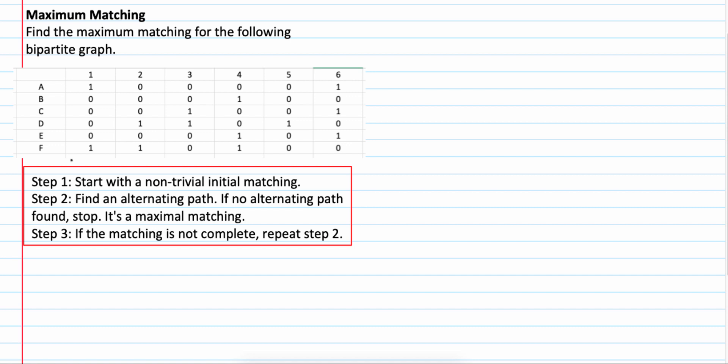There are 3 steps. Number 1, start with a non-trivial initial matching. Step number 2, find an alternating path. If no alternating path found, stop. It's a maximum matching. If the matching is not complete, repeat step 2.